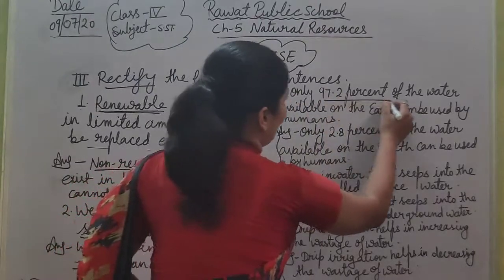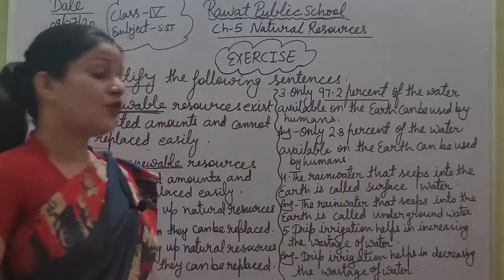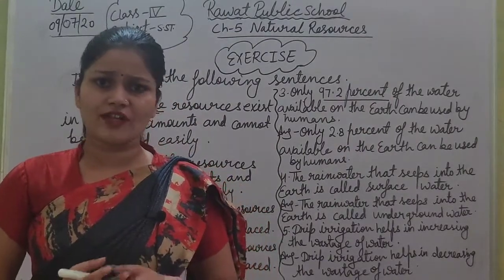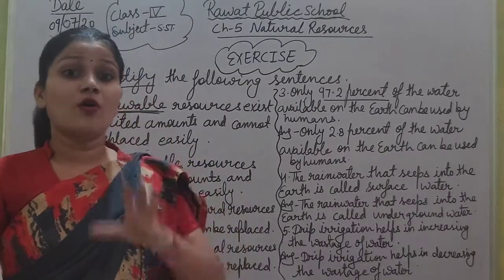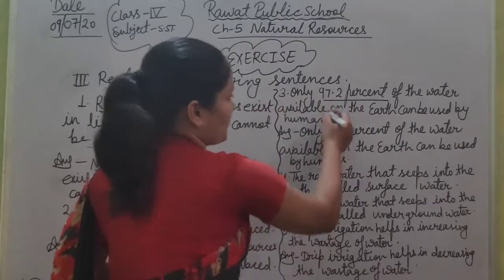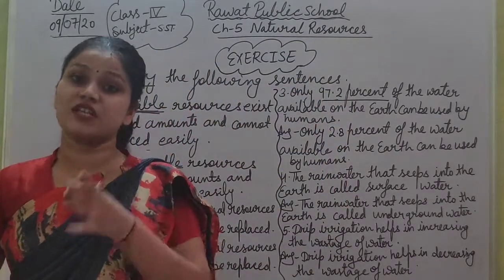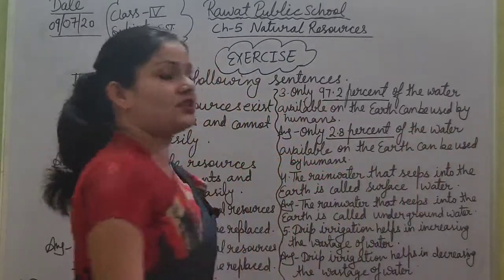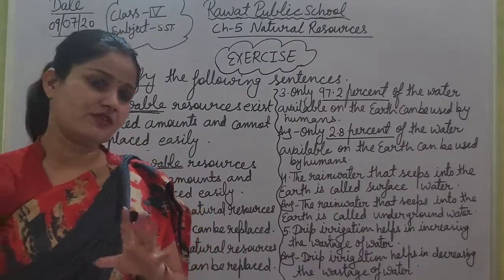Next sentence: 'Only 97.2% of the water available on the earth can be used by humans.' 97.2% water available on earth that humans can use — no, that is wrong. Only 2.8%. So in place of 97.2%, we write 2.8%. Only 2.8% of the water available on the earth can be used by humans.